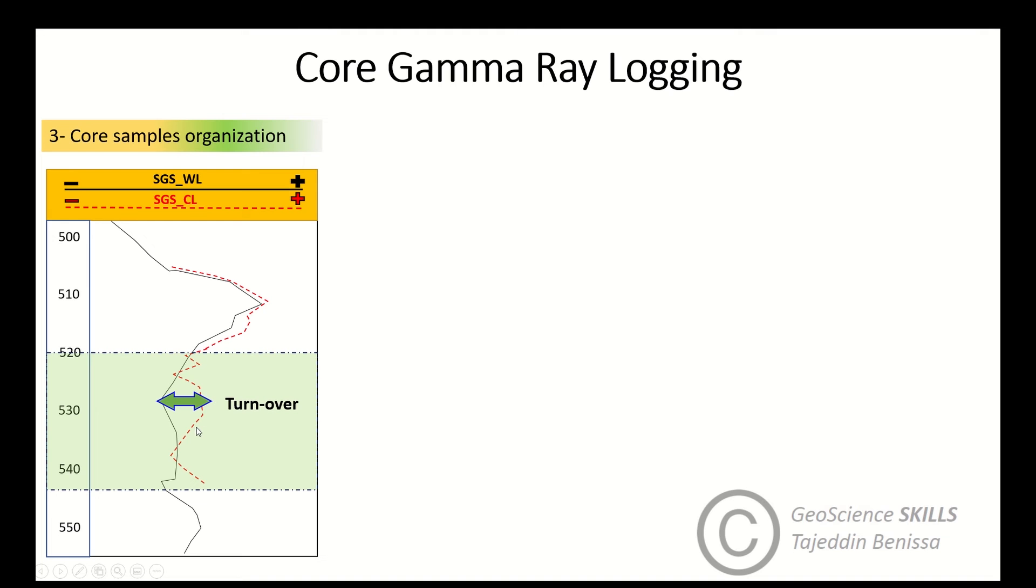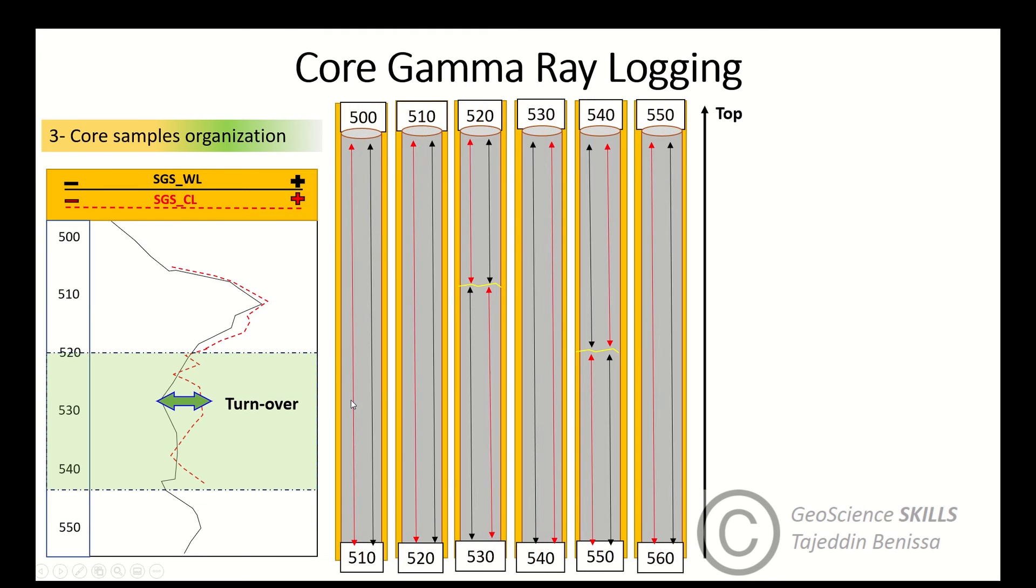The core gamma ray is logged upside down, which means that there is a problem with the organization of the core sample in this interval. So in this case we ask the technician to check the organization of the core sample associated with the error if they were laid properly from bottom to top.